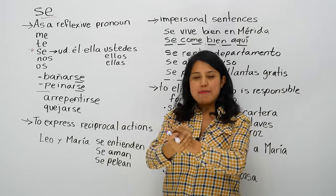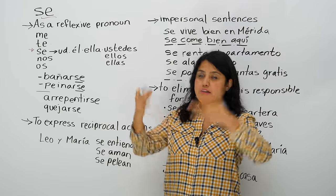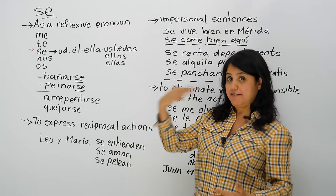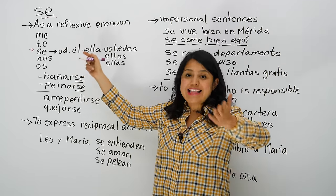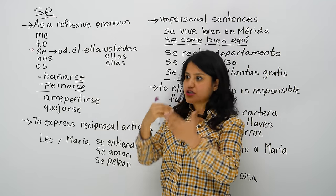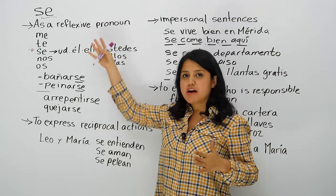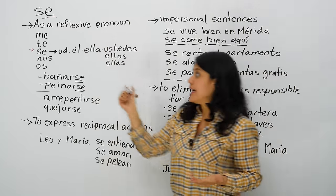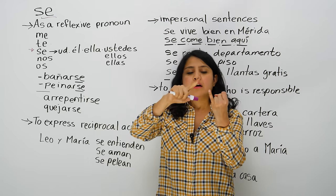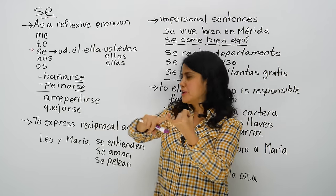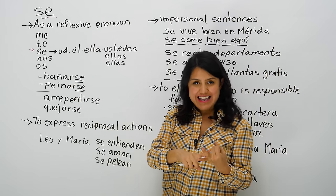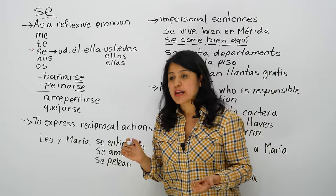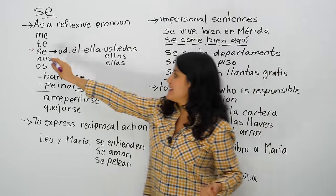For example: usted se lava las manos — it's your hands. Se lava el cuerpo — it's part of you. The action returns to you, reflects on you. Ella se lava los dientes. So we're not talking about two people. There are verbs and reflexive pronouns where the action is reflected. You're going to use this 'se' with él, ella, usted, ellos, ellas, and ustedes.